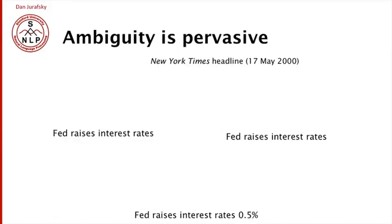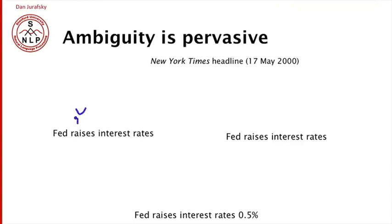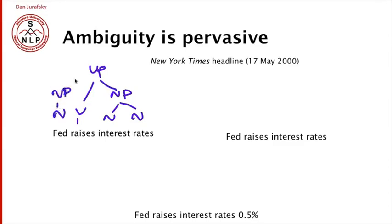It's not just amusing headlines that have ambiguity — ambiguity is pervasive throughout natural language text. Let's look at a seemingly non-ambiguous headline: 'Fed raises interest rates.' That seems unambiguous. We have 'raises' as the verb, 'interest rates' as the noun phrase that gets raised, 'the Fed' as the subject — a sentence with a noun phrase and a verb phrase. This is called a phrase structure parse. We could also write a dependency parse: the head verb 'raises' has an argument 'fed' and a dependent 'rates,' and 'rates' itself has a dependent 'interest.' So the main verb appears to be 'raises.'